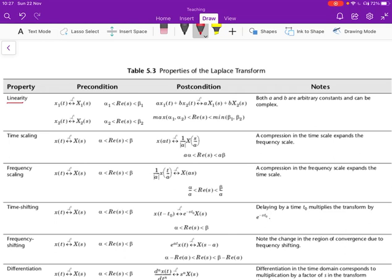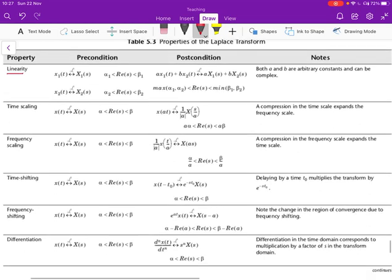Linearity is just similar to the Fourier transform. Essentially, if you're given two functions x1 and x2 whose transforms are capital X1, capital X2, and we have certain regions of convergence which are defined over here for alpha beta, the region of convergence for capital X1 and the region of convergence for capital X2 is alpha 2 less than beta 2.